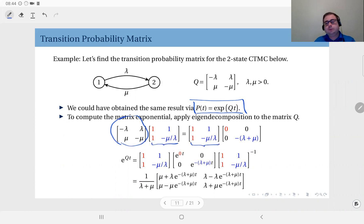And this is the diagonal matrix in which we have the eigenvalues on the main diagonal. So zero is an eigenvalue of the matrix q, and minus lambda plus mu is another eigenvalue.